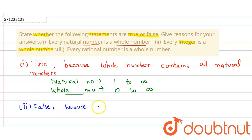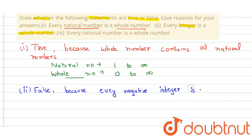Every negative integer is not a whole number. Whole numbers start from 0. They don't start from negative infinity, which integers do.